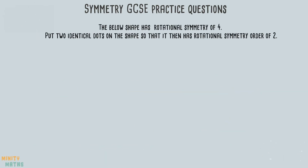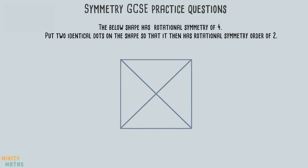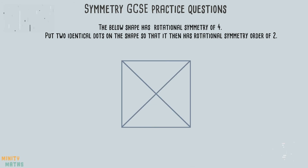For this next question, you are asked to alter the shape by placing two dots on it, so that the order of rotational symmetry will be reduced from 4 to 2. There are many correct answers for this question. Let's have a look at a possible position for the dots — see if you can come up with any more.